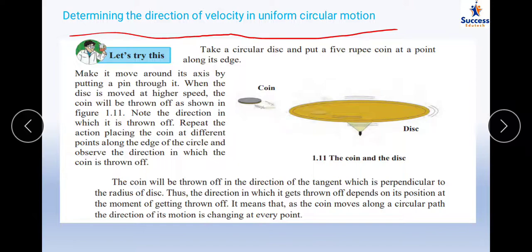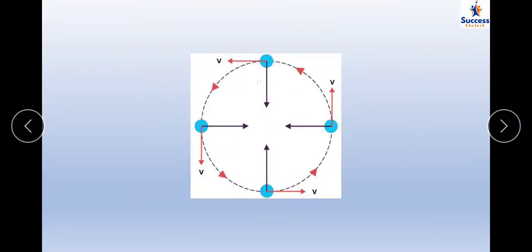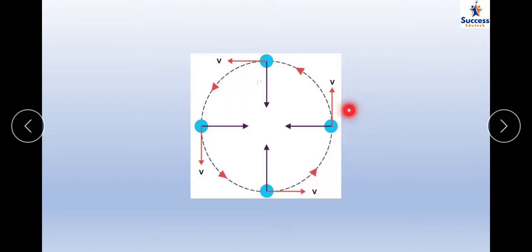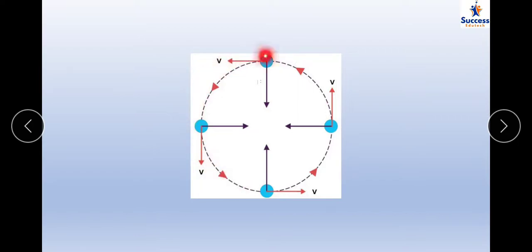The direction in which the coin is thrown off is the direction of the velocity of uniform circular motion. The coin is thrown off in the direction of the tangent, which is perpendicular to the radius of the circle. If the disc is moving and the coin is placed at any point, the coin will be thrown out along the tangent to the circle at that point. This tangent is the direction of the velocity of circular motion at that point.